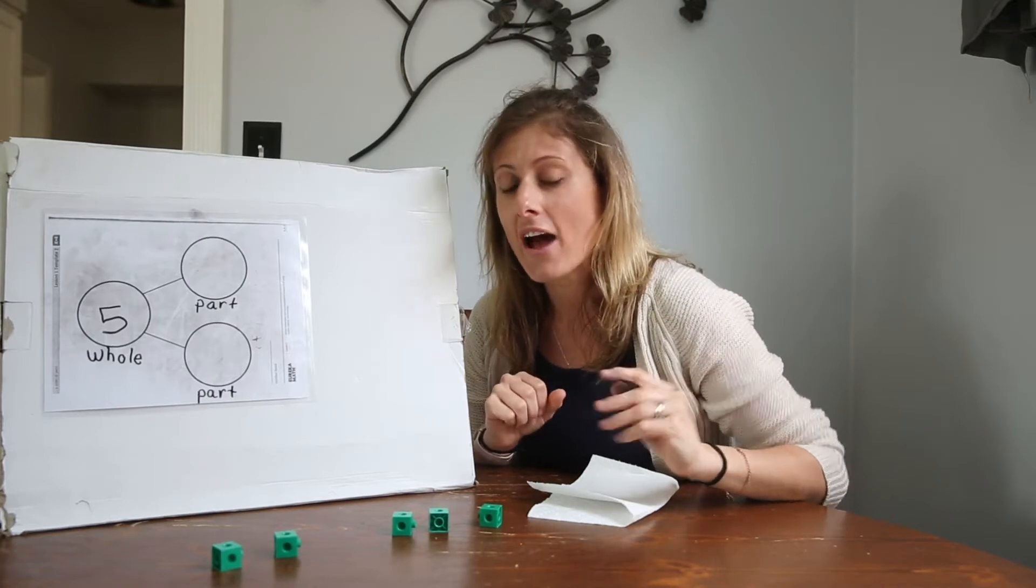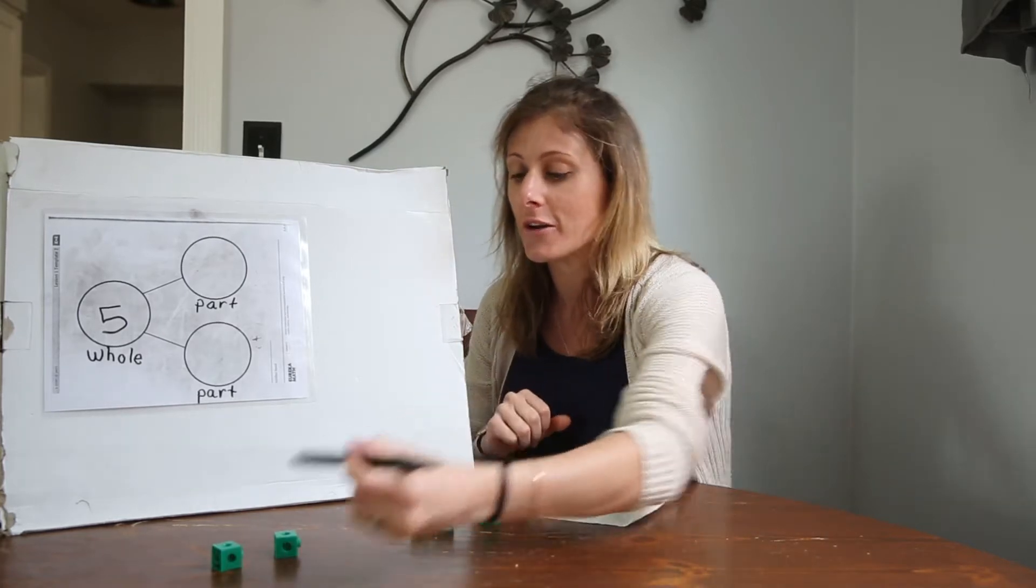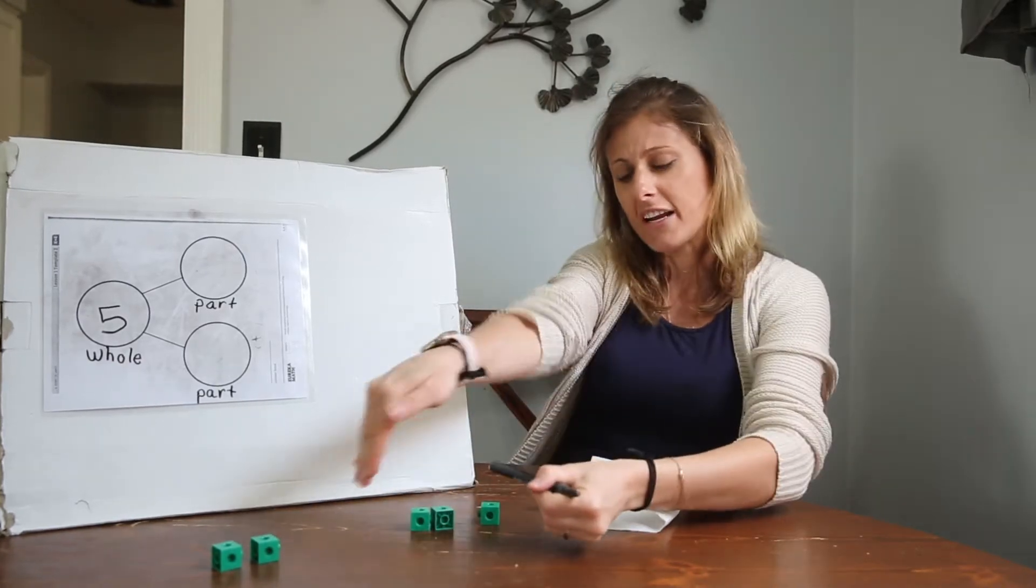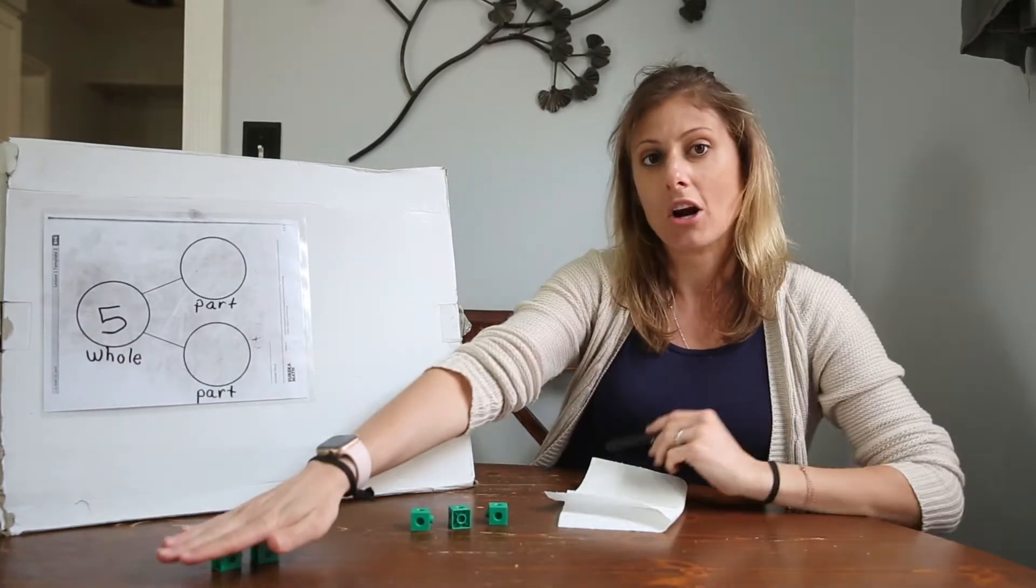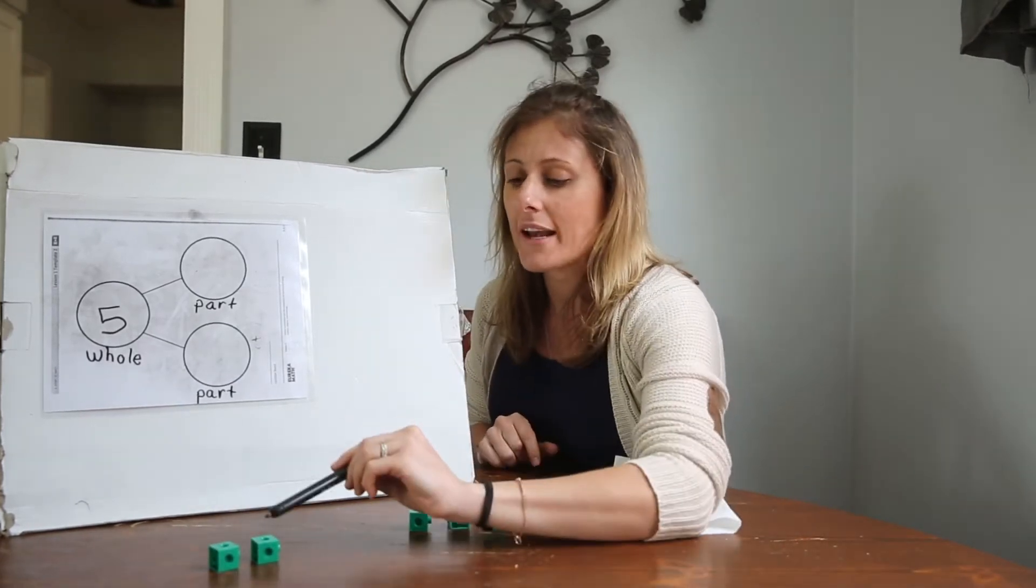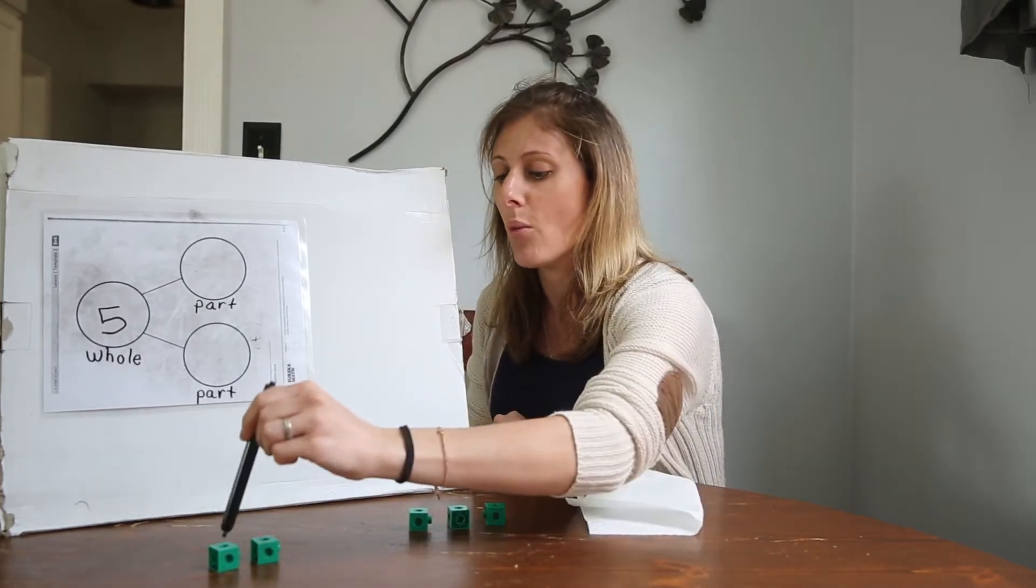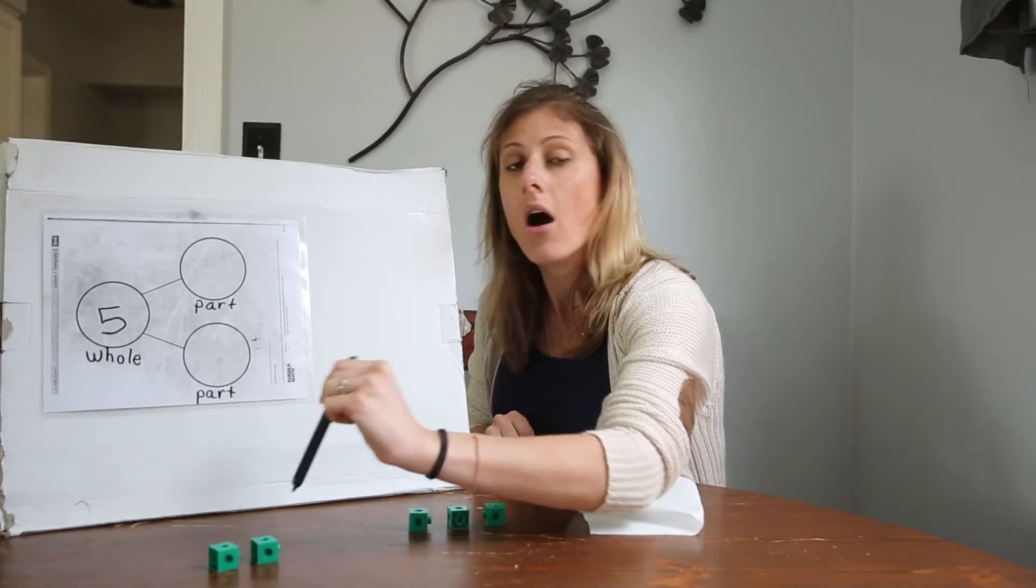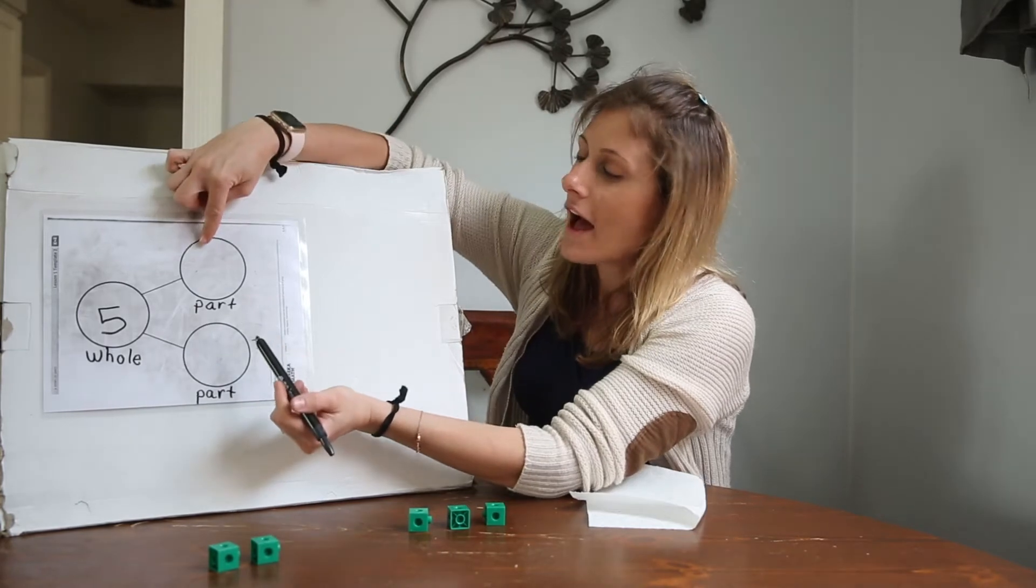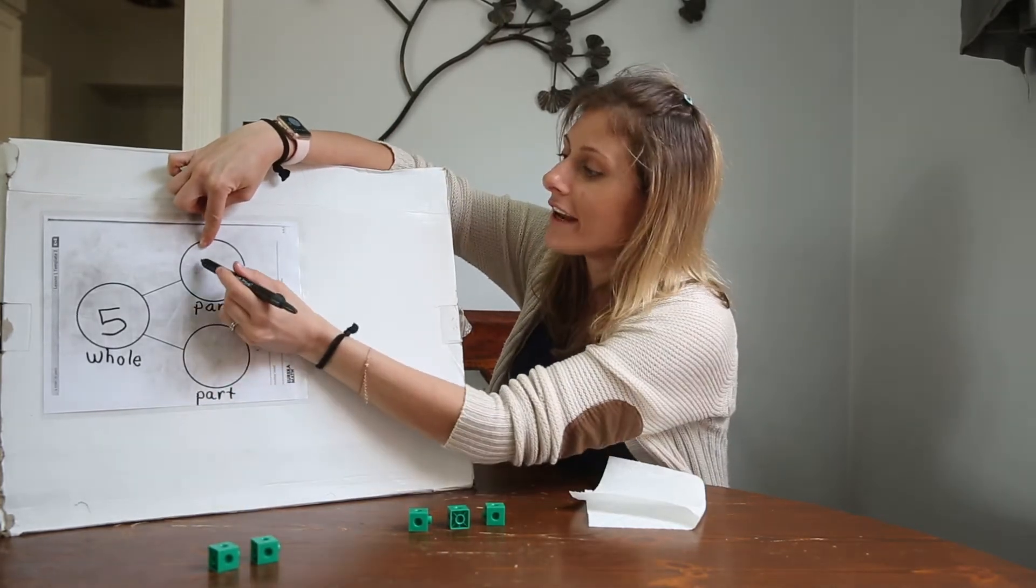Let's count how many we have in each part. See this group right here? It's separated from this group. So this is one part and this is the other part. How many is in this group? One, two. I have two cubes in one part. I can put the two right here.